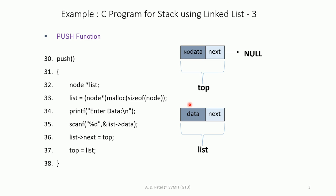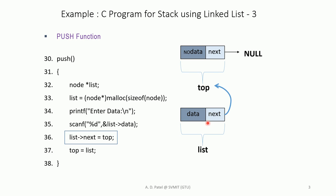After this, list will not have any data and its pointer is pointing to nothing. We then display a message to enter data, scan the input, and put it into list->data. This data is stored in the data variable of list. After that, the pointer of list is set to point to top, creating a link.